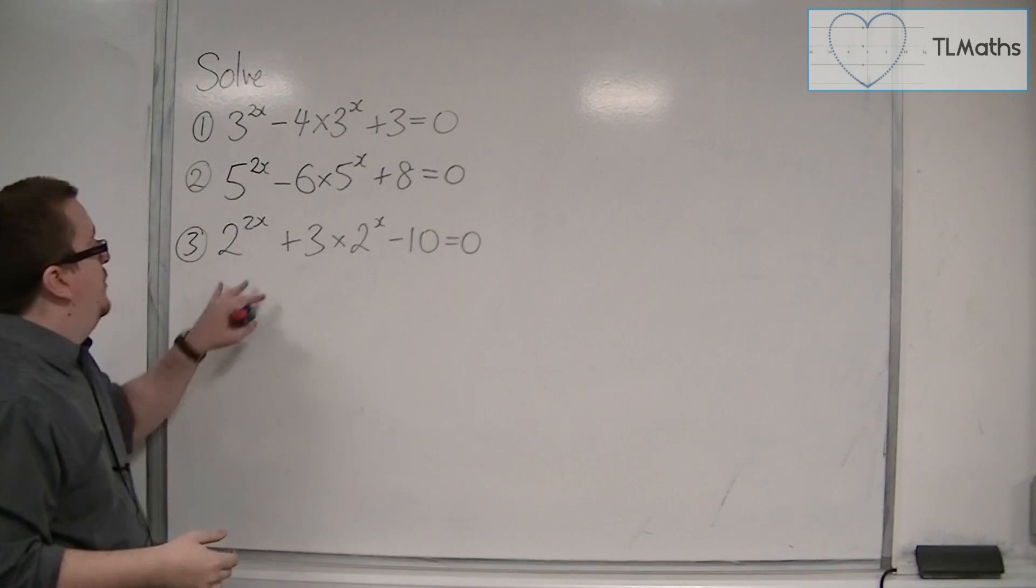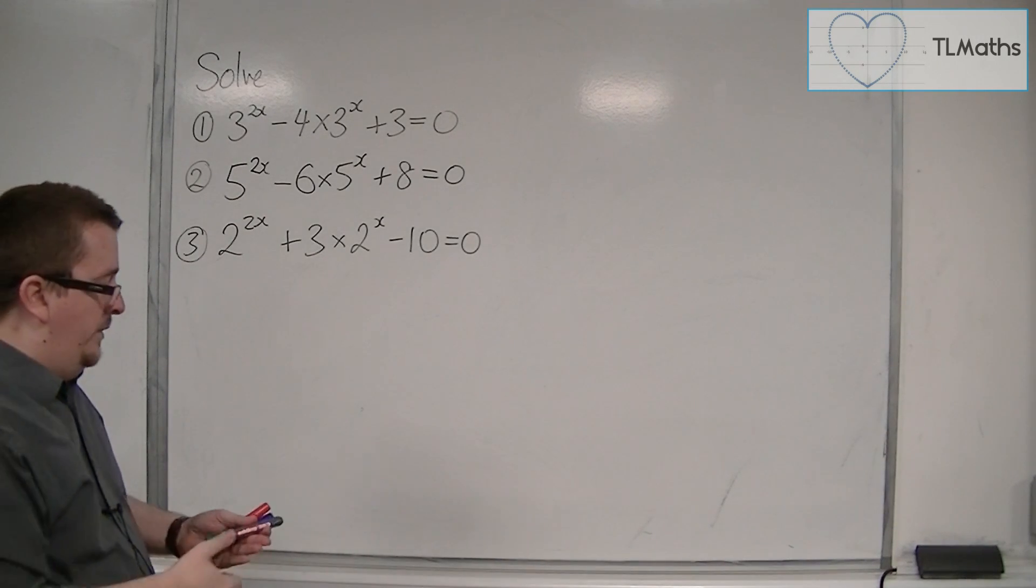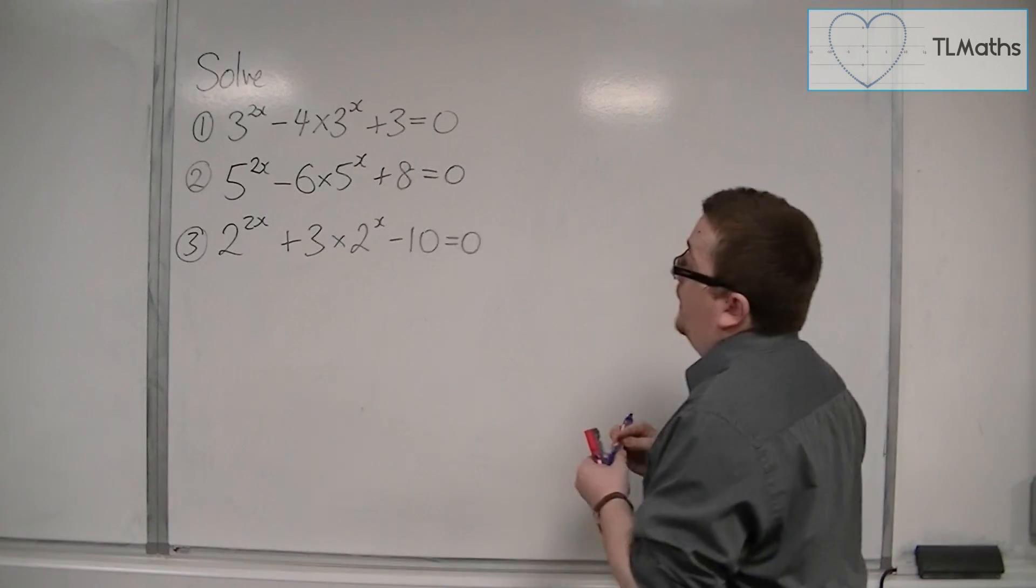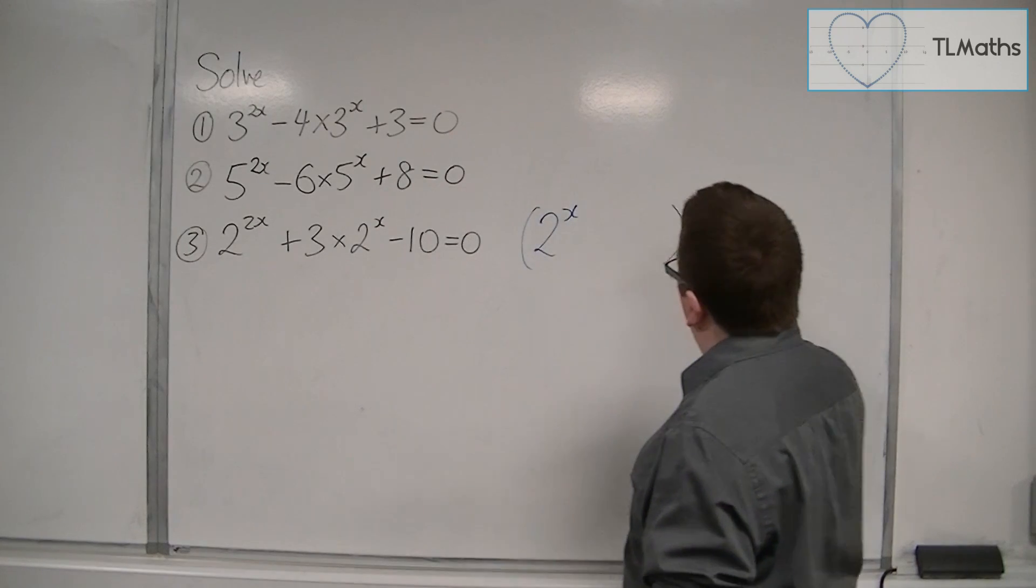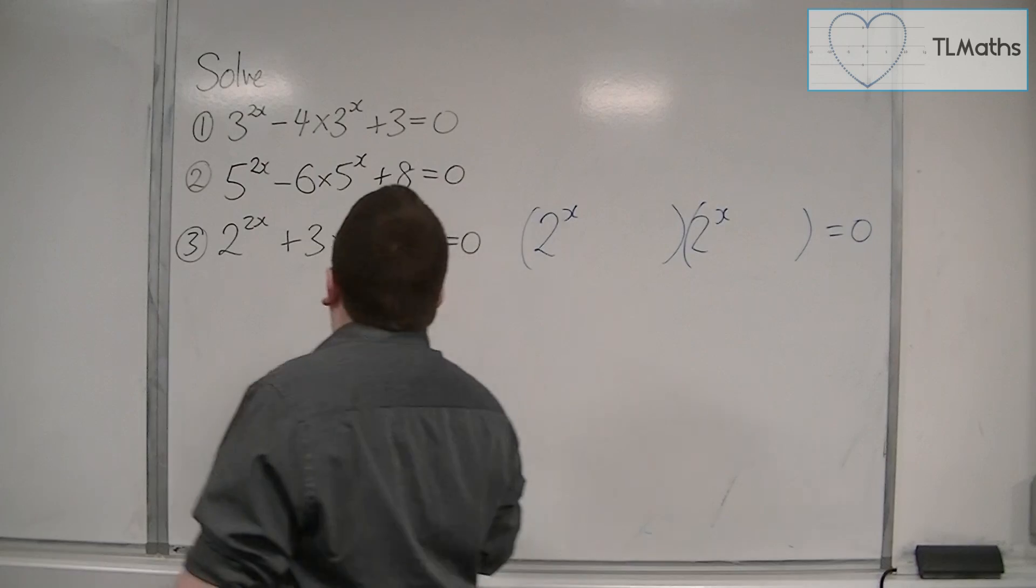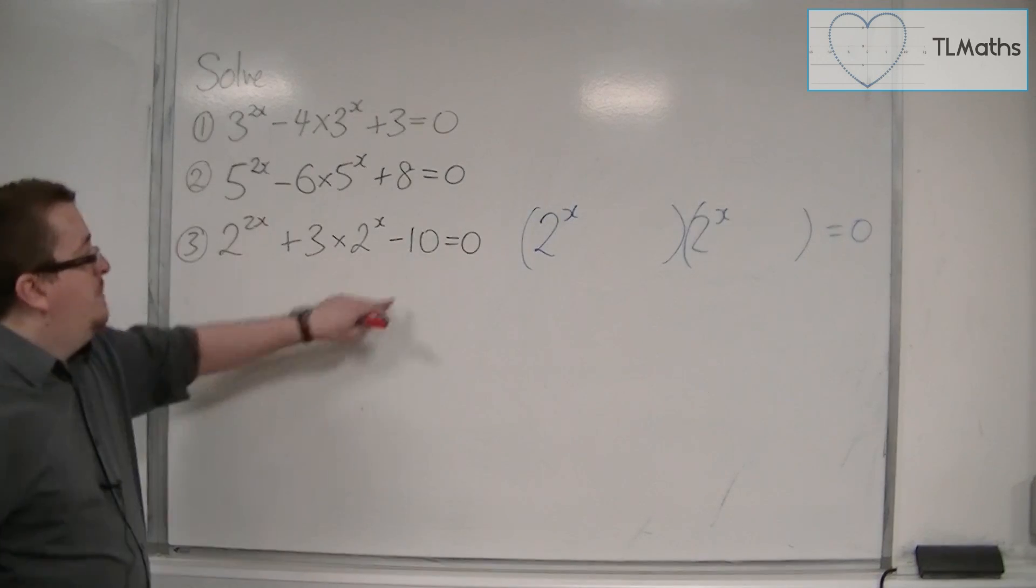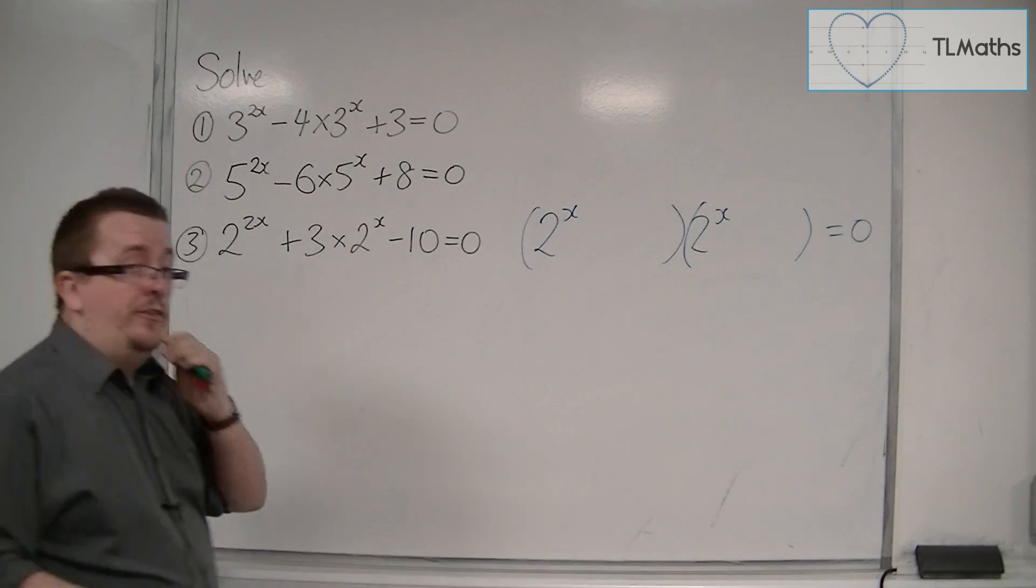Let's have a look at the third one. So 2 to the 2x plus 3 times 2 to the x take away 10 is equal to 0. So in this case we've got 2 to the x times 2 to the x. Two numbers that multiply together make minus 10 but add together make 3 would be plus 5 and minus 2.